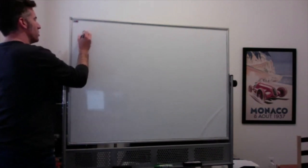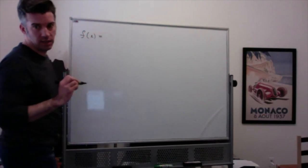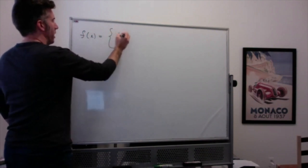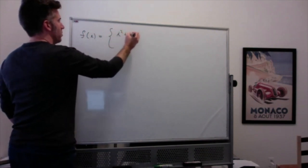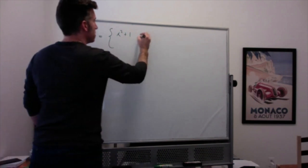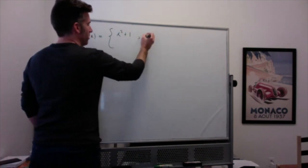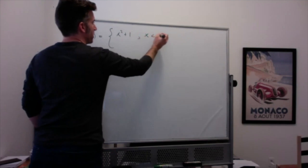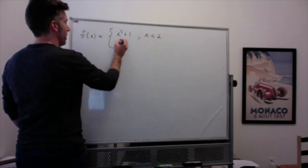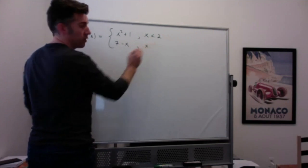Let's look at this piecewise function: f(x) equals x squared plus one when x is less than two — sometimes you put a comma here — and the other piece is seven minus x when x is greater than or equal to two.